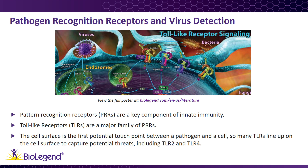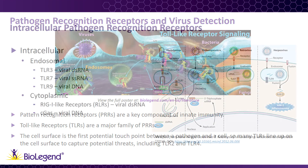Many TLRs are expressed on the plasma membrane, including TLR2 and TLR4, which bind bacterial components like peptidoglycan and lipopolysaccharide, respectively. However, TLR4 is also known to bind proteins expressed by several viruses, such as Ebola and the virus that causes dengue fever.